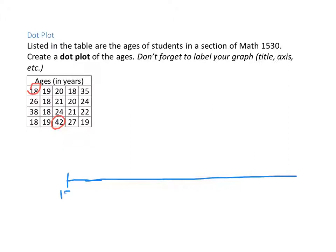So I'm going to start this at 15 and 16, 17, 18, 19, 20, 21, 22, 23, 24, 25, 26, 27, 28, 29, 30, 31, 32, 33, 34, 35, 36, 37, 38, 39, 40, 41, 42, so 42 is all the way over at the edge.